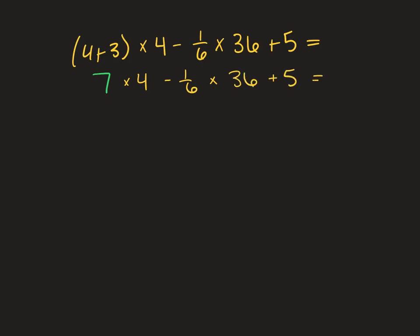I don't love that it doesn't give me the dot multiplication option when I put these in. What do we do next? Multiplication, right? So we're going to do our 7 times 4 and our negative 1/6 times 36. That gives us 28 and 6. Then you have 28 minus 6 and then add 5. So your final answer should be 27.